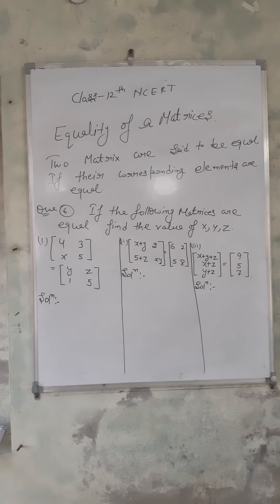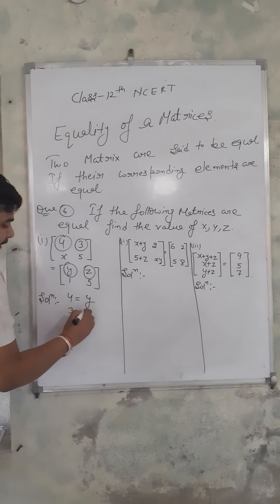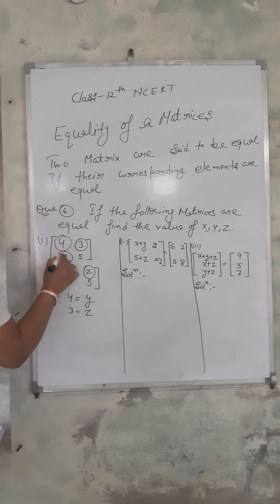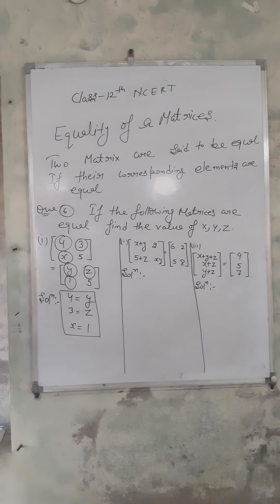In Question 6, we are given two matrices that are equal. We have to find x, y, and z. According to the definition, the first element equals this element, so 4 equals y. The second element: 3 equals z. Third element: x equals 1. This is the required answer.